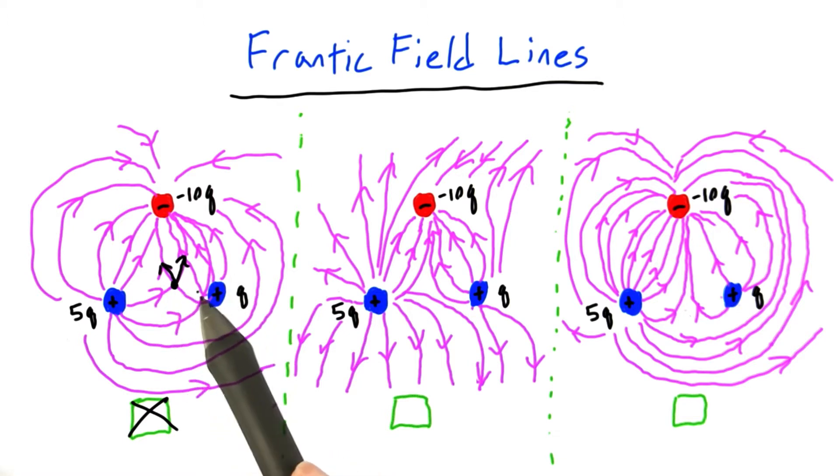And in fact, any time we have a field line diagram like this where two of the lines intersect, we've done something wrong. So we'll keep that in mind when we're looking at the other diagrams.